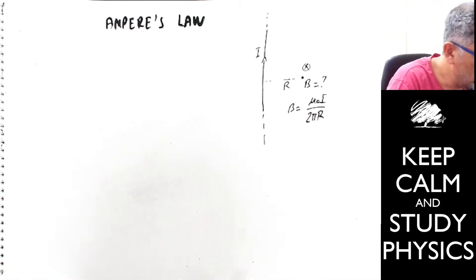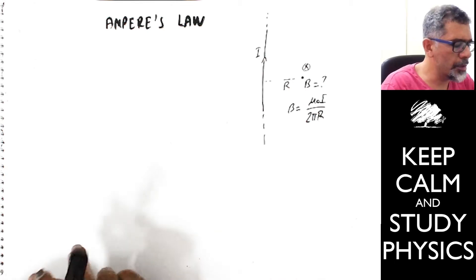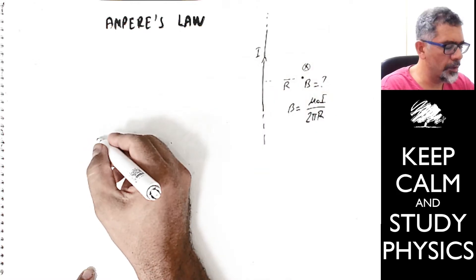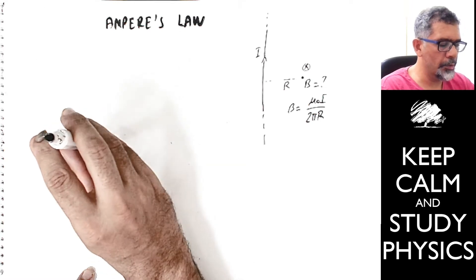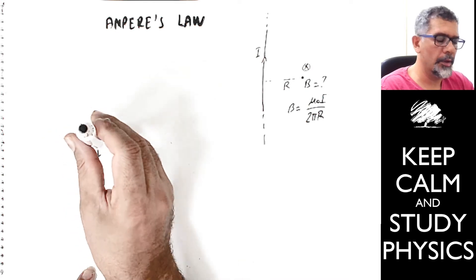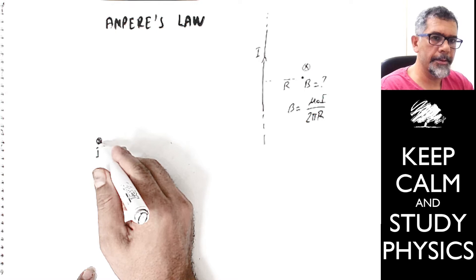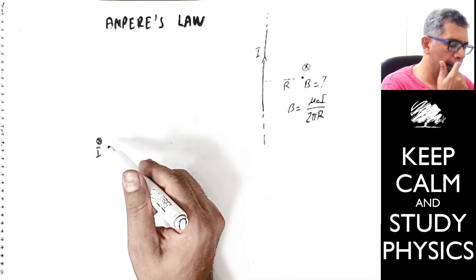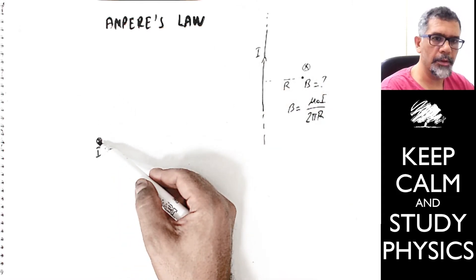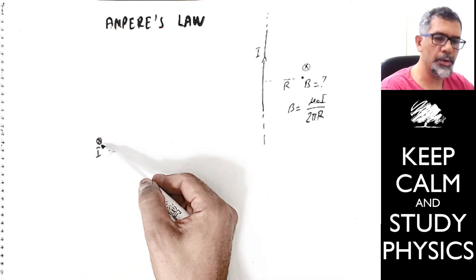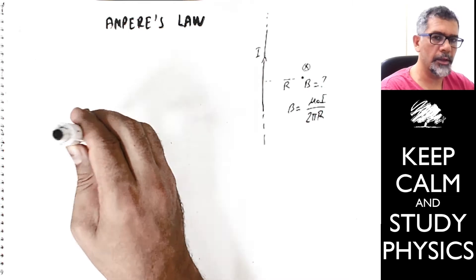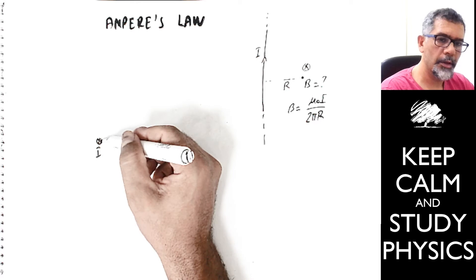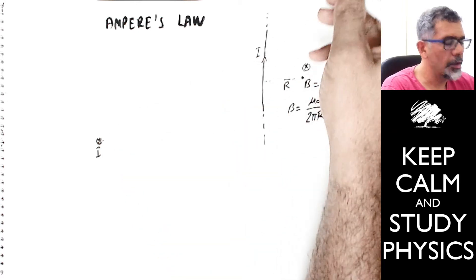Now let's talk about what Ampere's law is about. The current is pointing out of the page. In the side view the wire extends very long, and in the top view, holding it so it looks like a point. Now select any imaginary circle around this current source — let's draw a circle with radius R. We will take the line integral on this imaginary circle, which we label C.